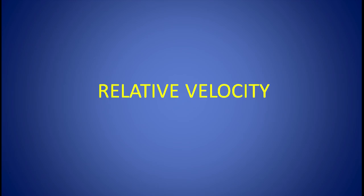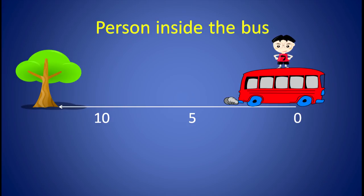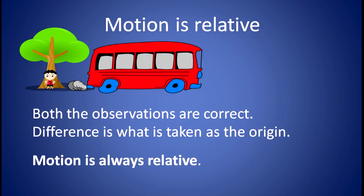Now, let us discuss relative velocity. In the figure on your screen, you see that the bus moved away from the tree. This person is comparing the position of the bus with respect to the position of the tree — the reference here is the position of the tree. Here you can see the person is on the bus; he observes that the tree moved away from the bus. The person is comparing the position of the tree with respect to the position of the bus. Both observations are correct; the difference is what is taken as the origin. So we can say that motion is always relative.